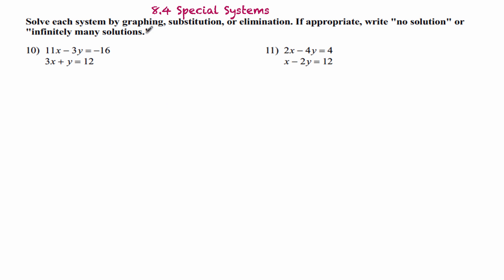It's called special systems or solving systems that are special. What happens is all the variables are going to cancel out if it's a special system. And then you're either left with a true statement or a false statement. If it's true, then you say infinitely many solutions. If it's false, it's no solution. So let's look at number 11. I'm going to multiply the bottom equation by negative 2. I'm going to rewrite the top equation. So the top equation, 2x minus 4y equals 4. And the bottom equation is negative 2x plus 4y equals negative 24.